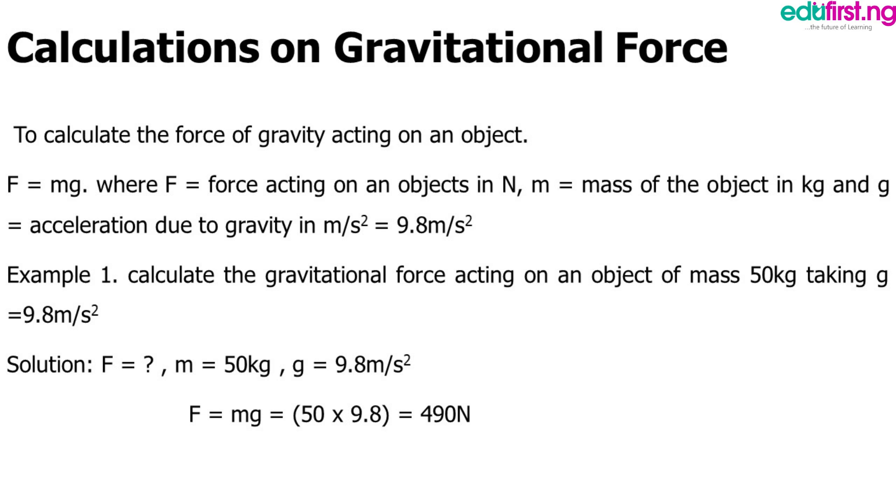Example one. Calculate gravitational force acting on an object of mass 50 kg, taking g equal to 9.8 meter per second squared. Solution: itemize what you are given in your question. We have F which equals the force that we are asked to calculate. M which equals 50 kg. And g is given to be 9.8 meter per second squared. From our formula, F equals mg. That is mass times acceleration, which means we multiply 50 times 9.8, which gives 490 Newton. Don't forget to put your unit there, which is Newton.